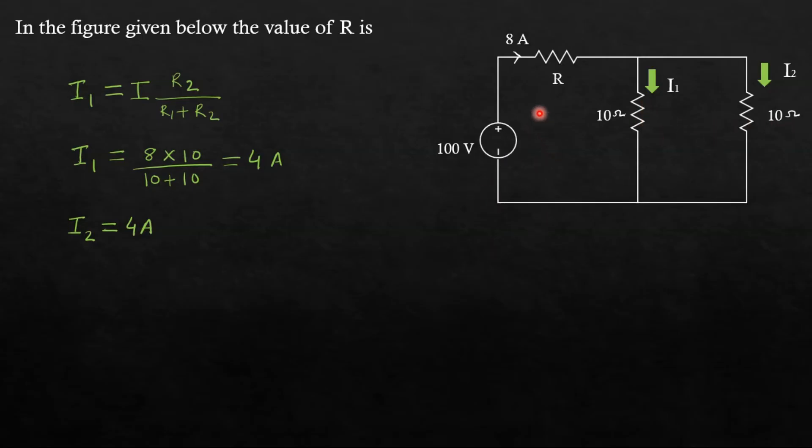Now in order to find the value of R, let us apply Kirchhoff's Voltage Law in this loop. First, let us assign polarities as per the current direction. The current is entering at this terminal so this one is positive and leaving at this terminal so this is negative. Similarly, I1 is entering at this terminal, that is why this is positive, and leaving this terminal, that is why this is negative.